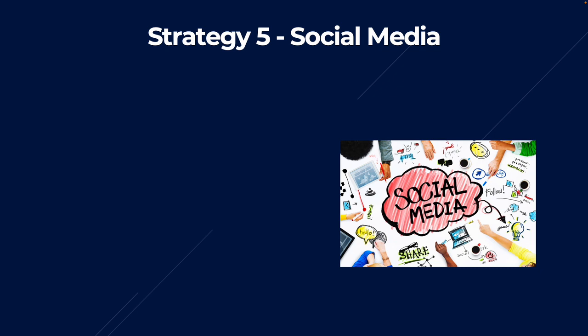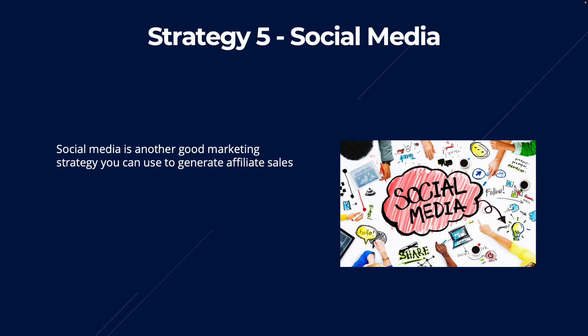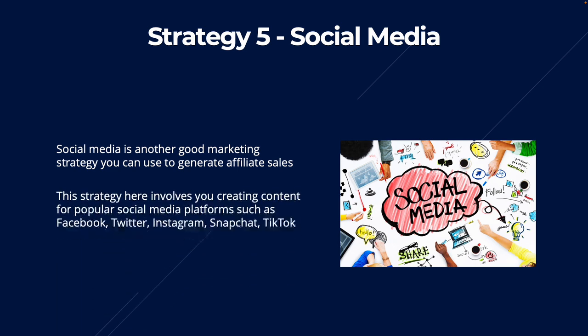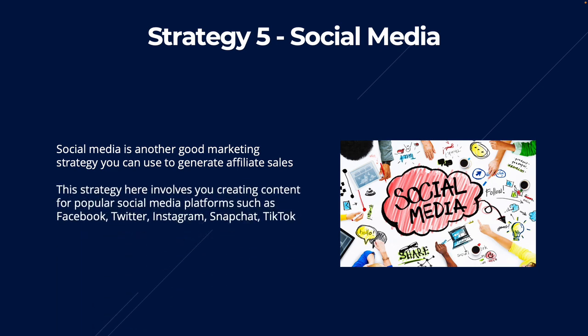Moving on to strategy five: social media. Social media is another good marketing strategy you can use to generate affiliate sales. The strategy involves creating content for popular social media platforms such as Facebook, Twitter, Instagram, Snapchat, and TikTok — reviewing a product, telling everyone how awesome it is, and then telling them to swipe up or click the link to buy it too. In that description or when they swipe up, you plug your affiliate link, which is how you generate your affiliate sales.